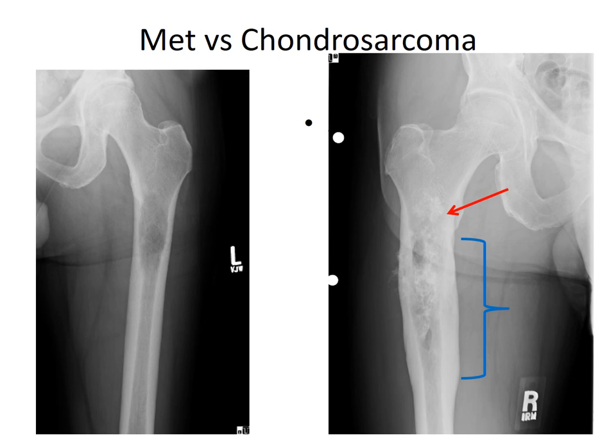Here is a radiographic comparison of metastatic disease on the left versus chondrosarcoma on the right. The lesion on the left is subtrochanteric, lytic, and destroying the bone — the tumor is clearly overwhelming the bone with no bone response. In contrast, the chondrosarcoma on the right shows bone expansion as seen by the blue lines, and the matrix shown by the red arrow has areas of arcs, rings, and punctate calcifications. There is a clear difference in the chronicity of these two lesions.